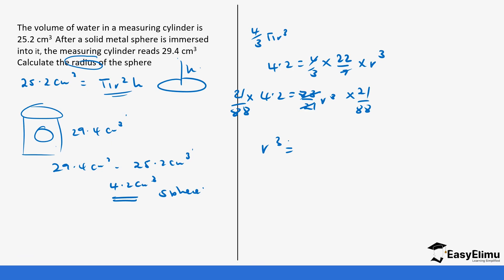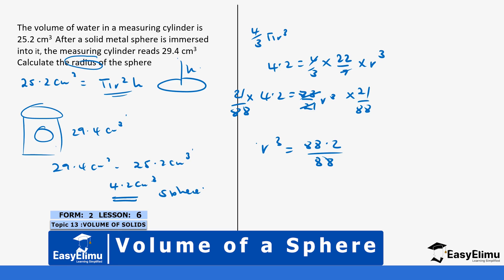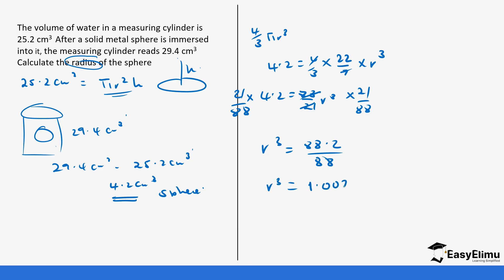This gives us r cubed = 4.2 times 21 divided by 88, which equals 1.00223. Taking the cube root of both sides gives us the radius equals 1, because 1 times 1 times 1 equals 1.001 centimeters.